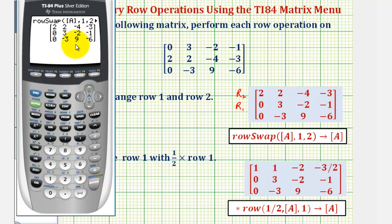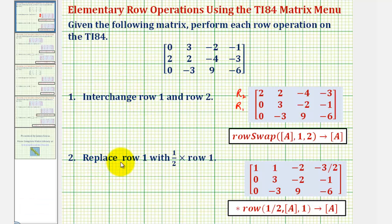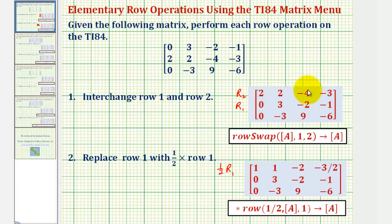Notice how this matrix is the same as the expected result — it did perform the row swap as expected, and this is our new matrix A. For operation two, we want to replace row one with one-half times row one in our new matrix. Notice how it is: one-half times two is one, one-half times negative four is negative two, and so on. Let's duplicate this on the TI-84.